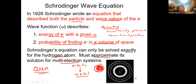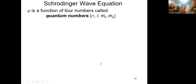Schrödinger said this orbital can be described by the so-called four quantum numbers. The first three quantum numbers tell you the location of the electron, while the fourth one tells you the spin. This is what we're going to discuss today.